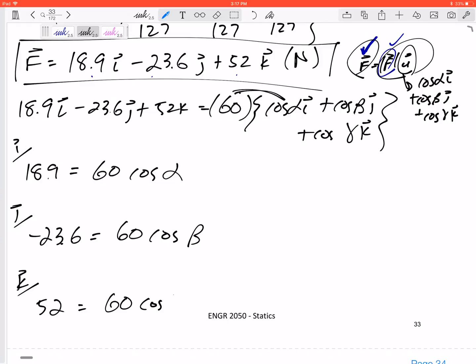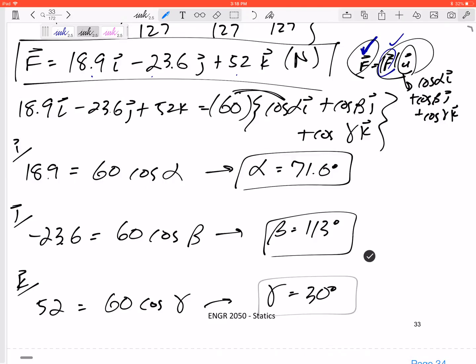And the K's: 52 is the only K on the left hand side, on the right hand side 60 times cosine gamma. From that first equation I would get, plug it in my calculator, get alpha is 71.6. Here I would get beta is 113, and here I would get gamma is 30 degrees.